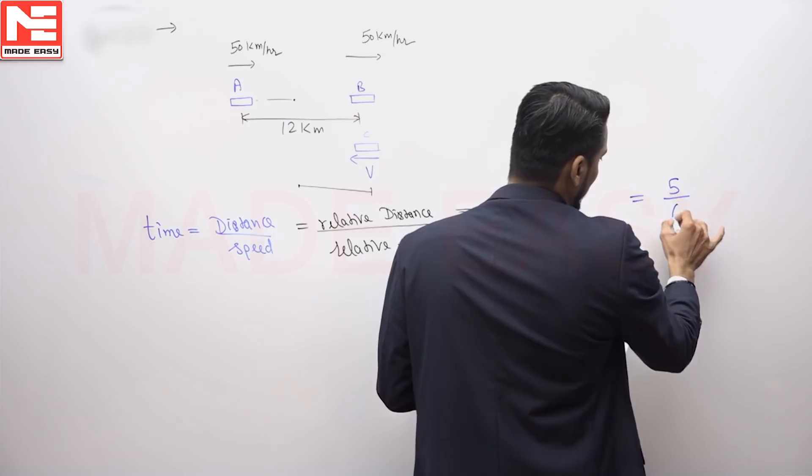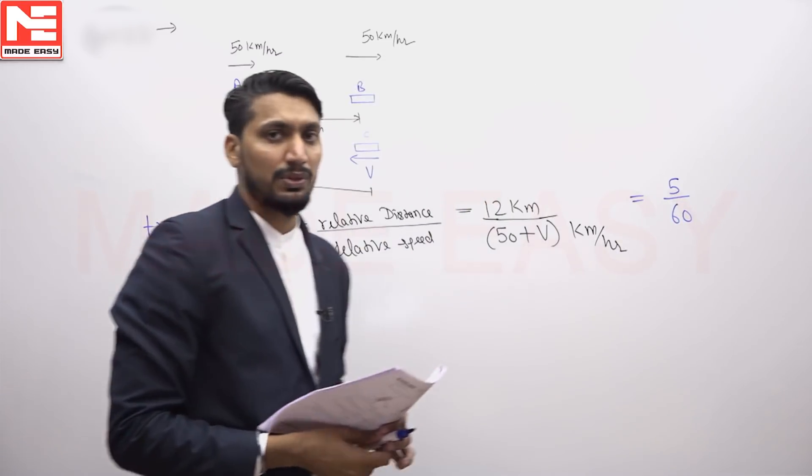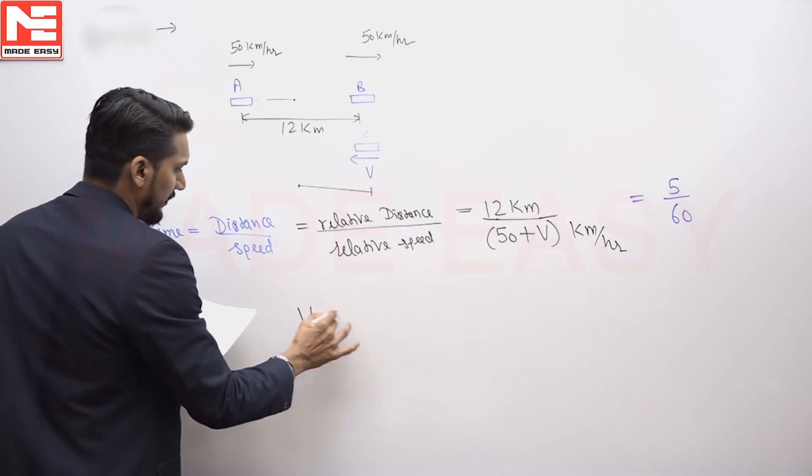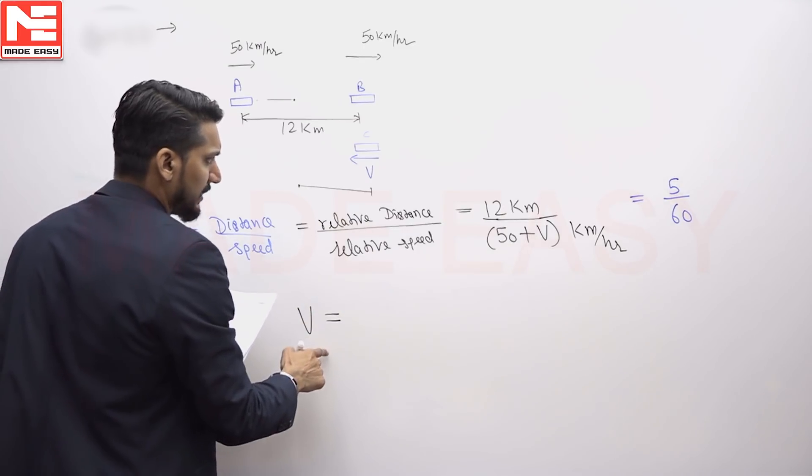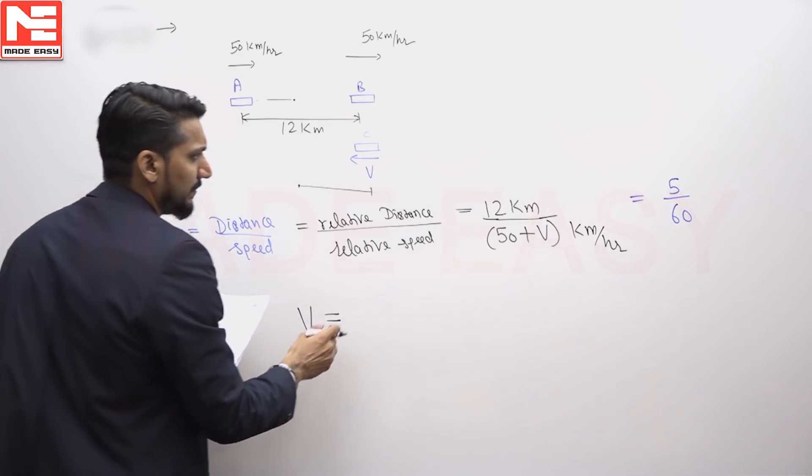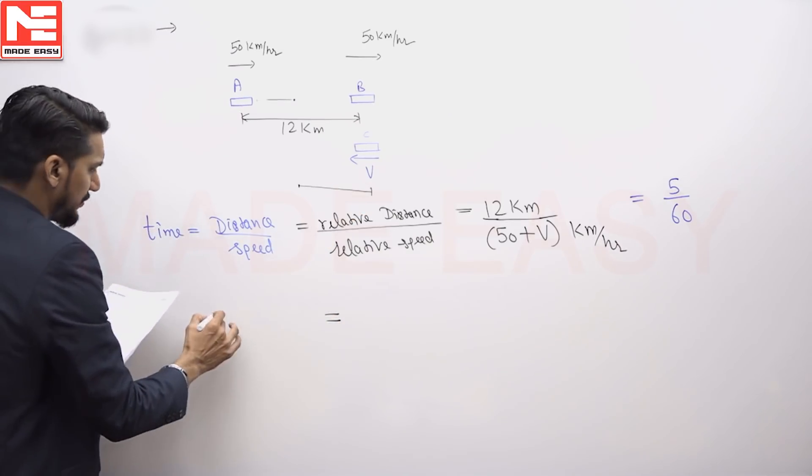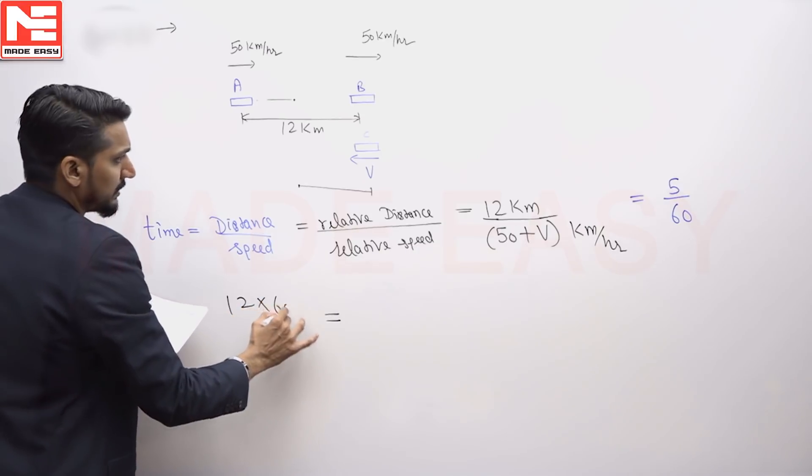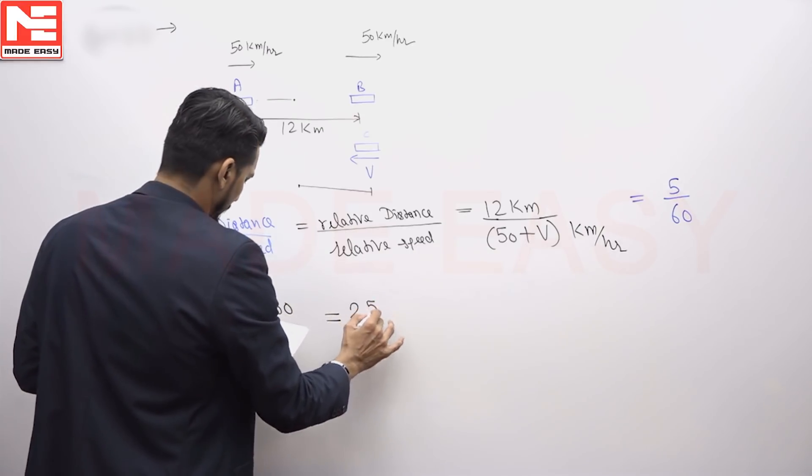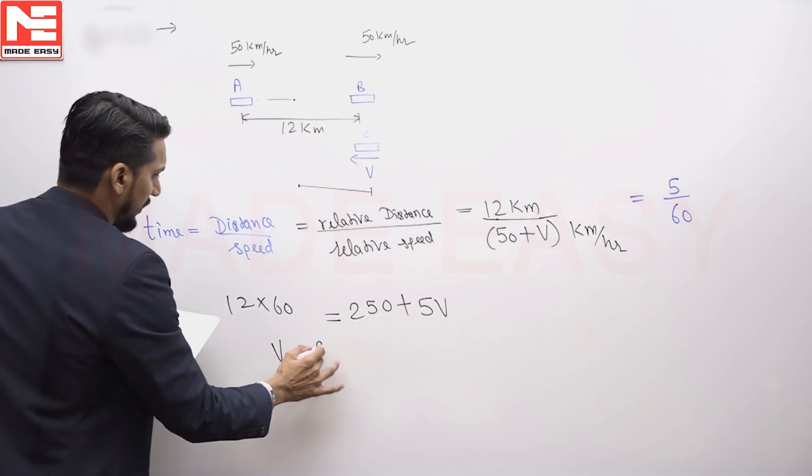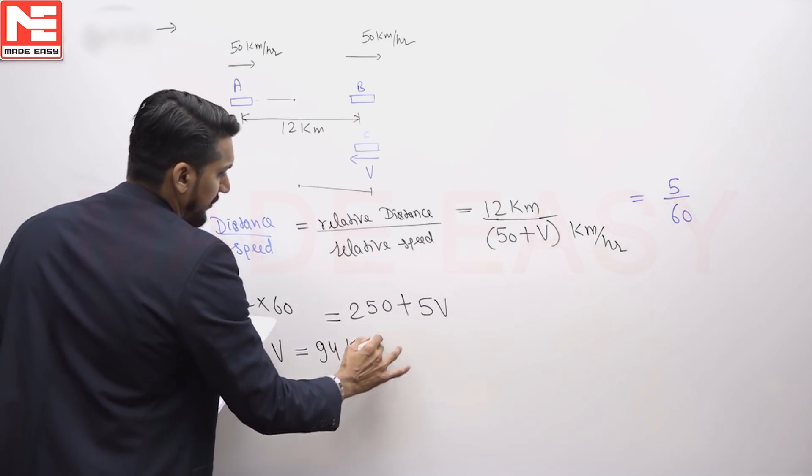I am going to convert this to hours, so it will come out equal to 5 by 60. After solving this equation, 12 equals 50 plus V times 5 by 60. This becomes 12 times 60 equals 250 plus 5V. From here, V will come out equal to 94 kilometer per hour.